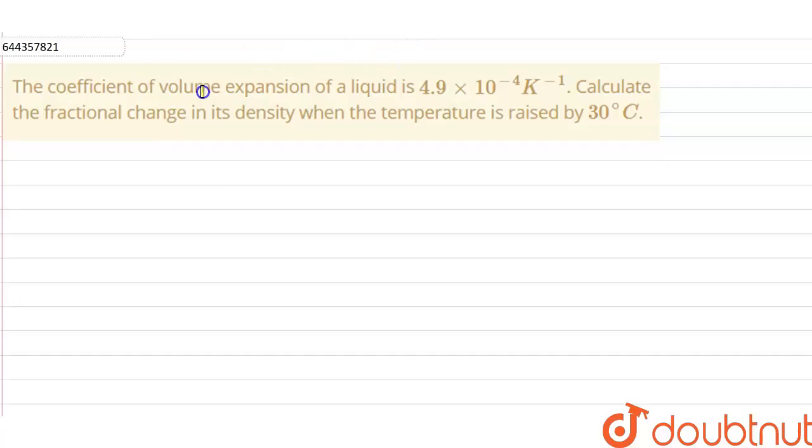Hello everyone, so our question is: the coefficient of volume expansion of the liquid is 4.9×10^-4 per Kelvin. Calculate the fractional change in its density when the temperature is raised by 30 degree Celsius.